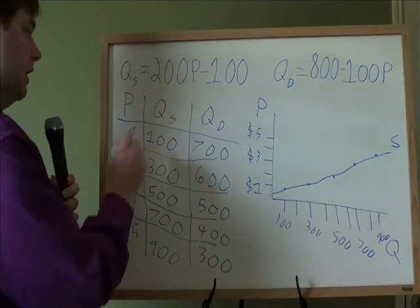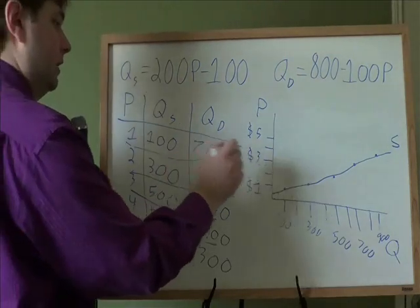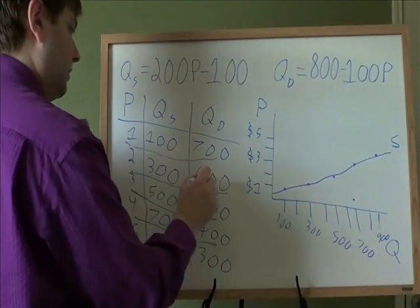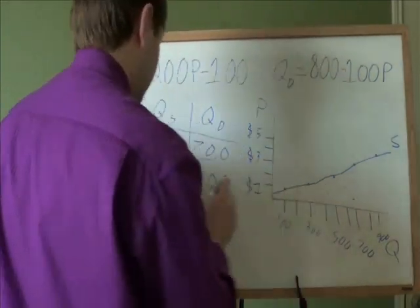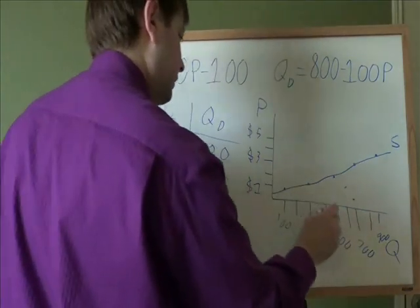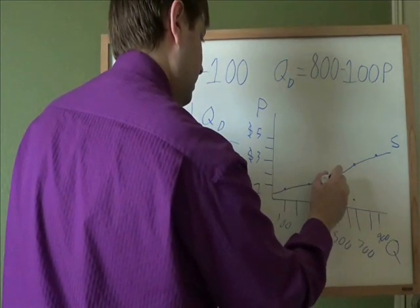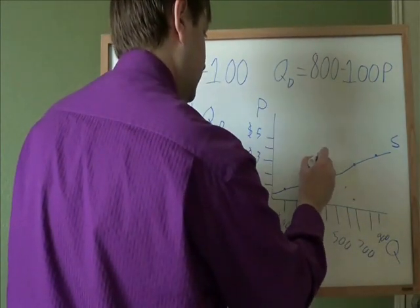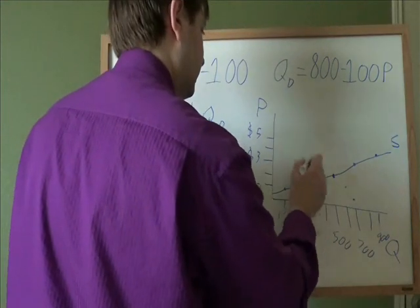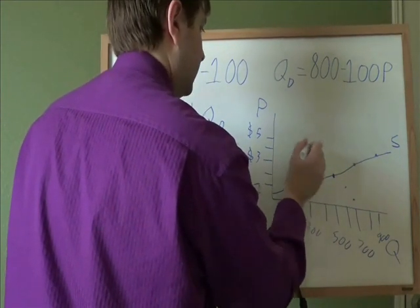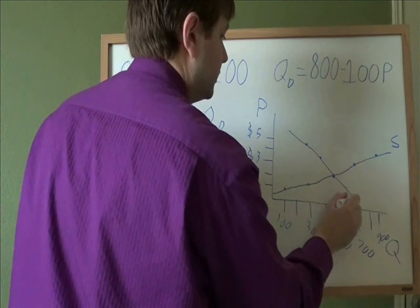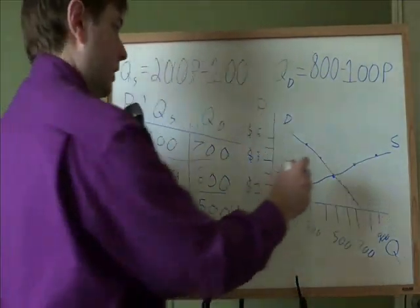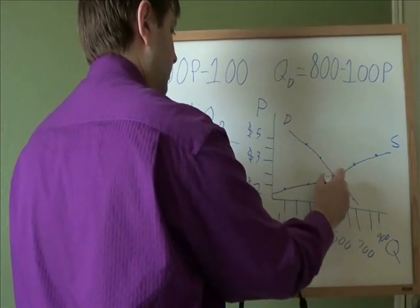Demand curve, you do about the same way. At $1, the quantity demanded is 700. $2, quantity demanded is 600. $3, 500, which is that same point we had before, $4 and 400, $5 and 300. And putting those in a line is our demand curve. And in the middle there is that equilibrium point that they both had in common.